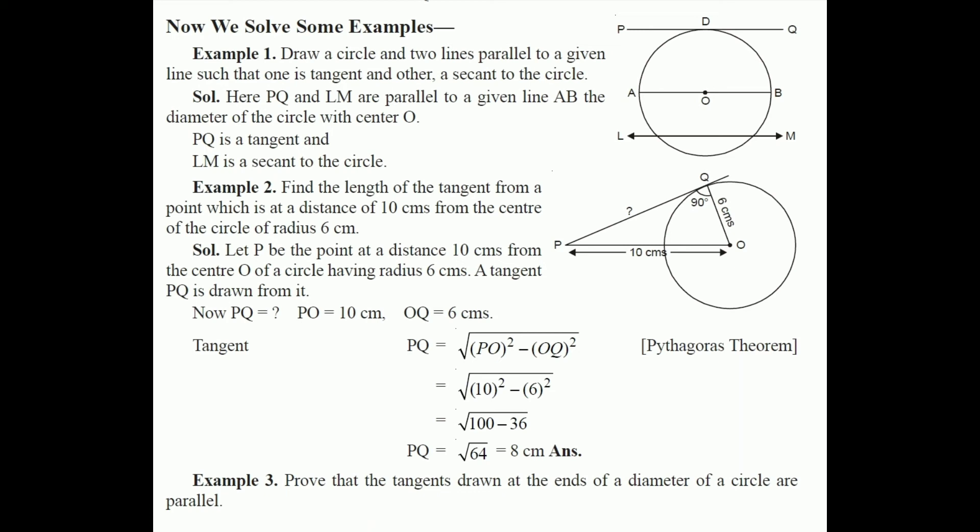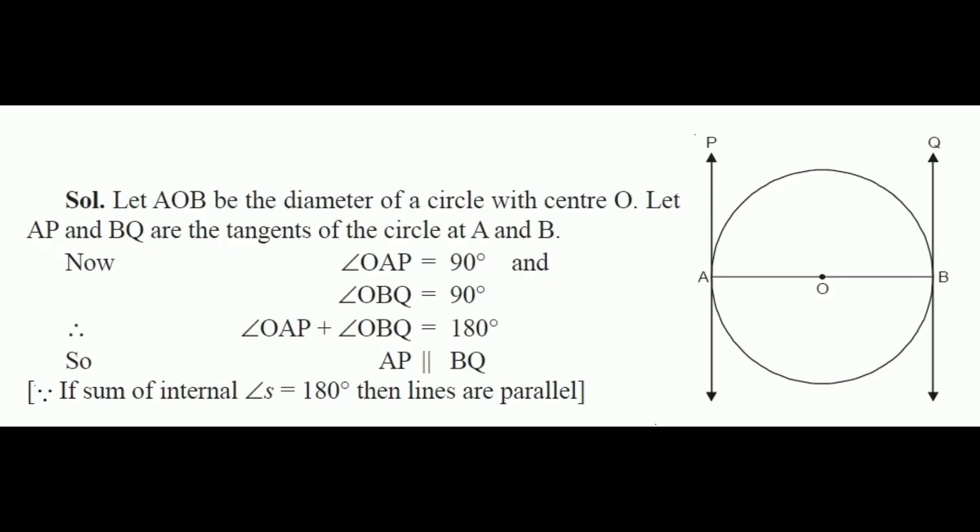In this way we can solve problems based on tangents quite easily. Example 3: Prove that the tangents drawn at the ends of a diameter of a circle are parallel. We need to draw the diameter of the circle and from both endpoints draw two tangent lines, then prove they are parallel.